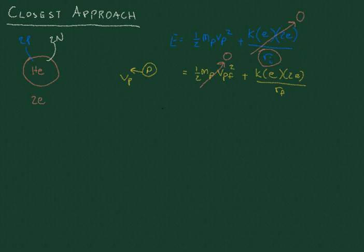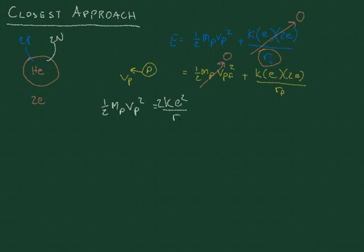That leaves us with: one-half times the mass of the proton times the velocity of the proton squared equals 2k times e squared over r_final. Solving for r_final gives us 4k times e squared divided by the mass of the proton times the velocity of the proton squared.